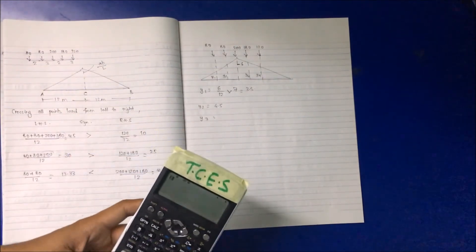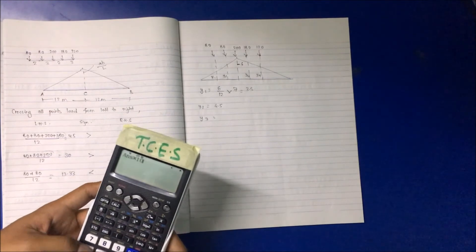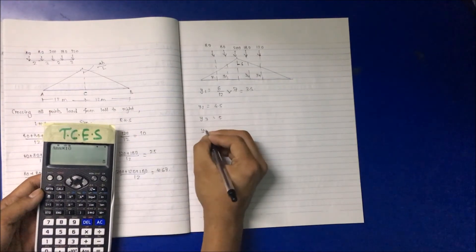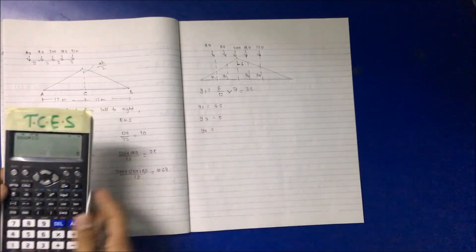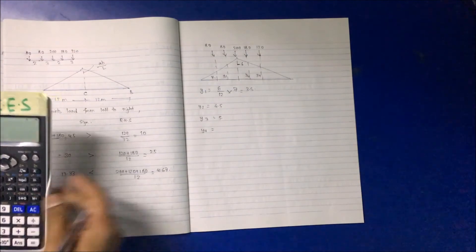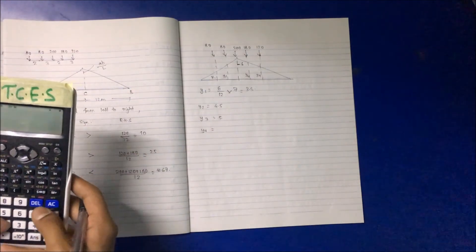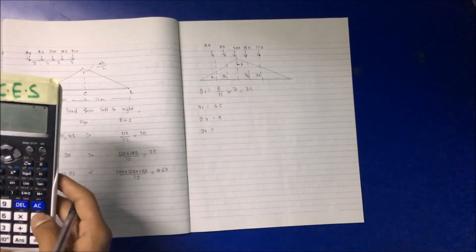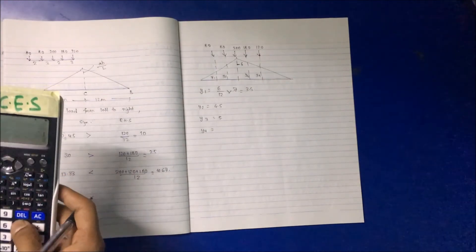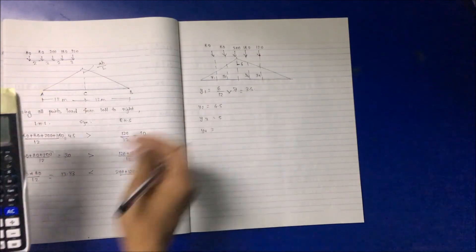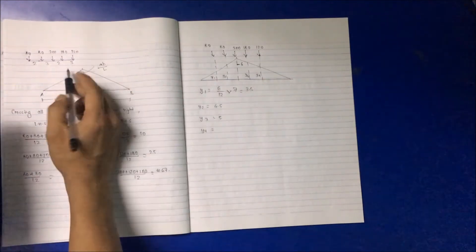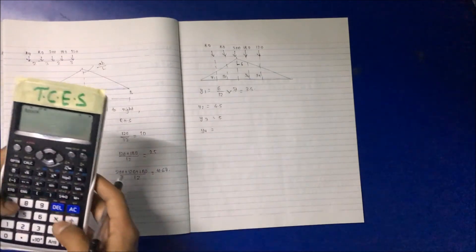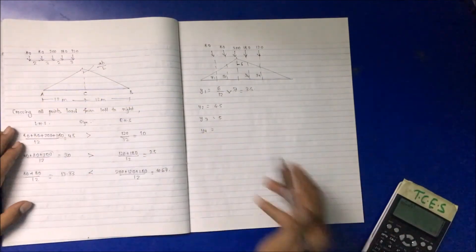Continuing: y3 = (6/12) × 10 = 5. And finally, y4 = (6/12) × 7 = 3.5 m.